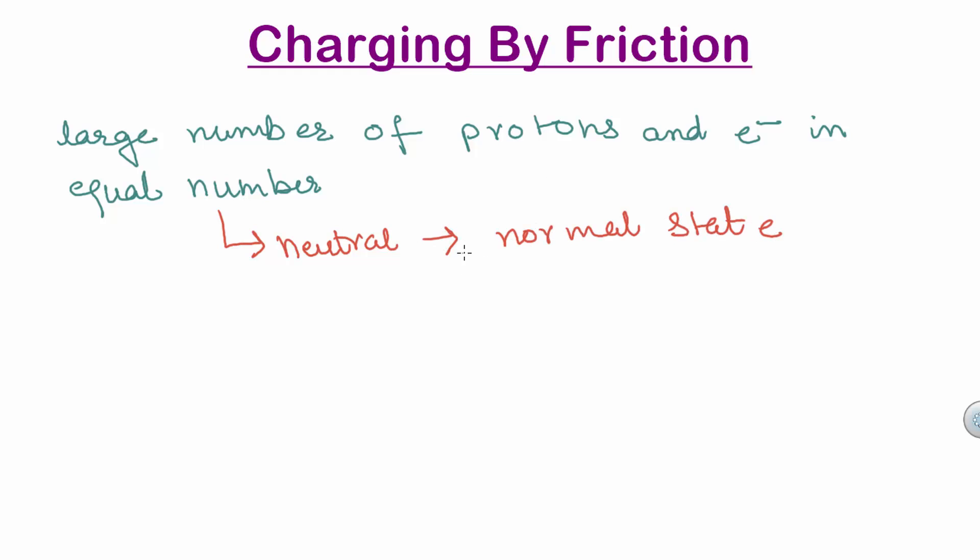The explanation of appearance of electric charge on rubbing is simple. Material bodies consist of large number of electrons and protons in equal number and they are neutral in their normal state. But when a glass rod is rubbed with a silk cloth, electrons are transferred from glass rod to silk cloth.